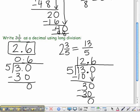So, in both cases, you get that 2 and 3 fifths as a decimal is 2 and 6 tenths. And, that is a review on changing fractions into decimals.